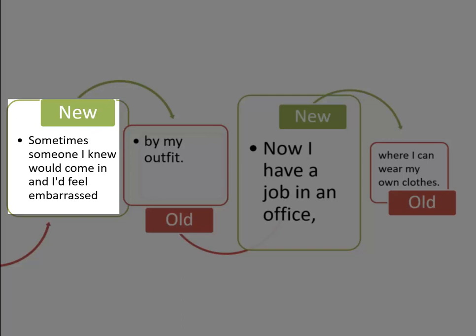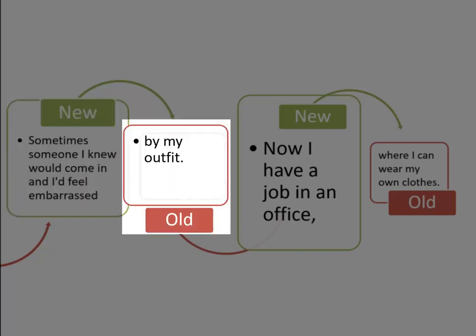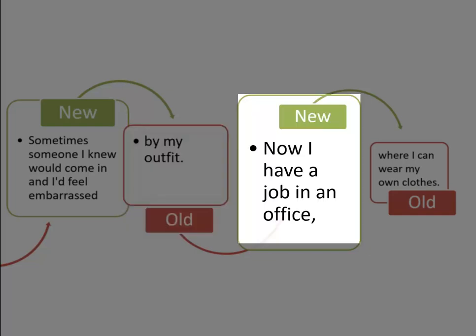The first part of the third sentence introduces new information about feeling embarrassed when someone she knew came in and saw her. And then it goes on to tie back to the old information — the outfit — which is the topic that we've been speaking about all the time.